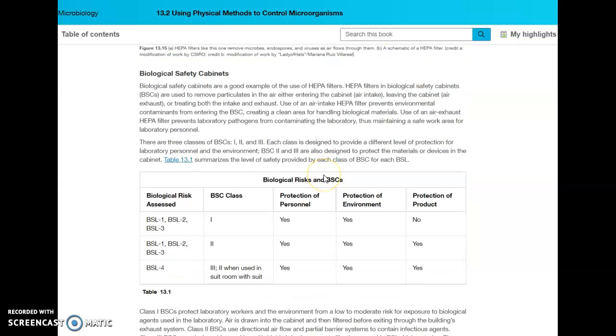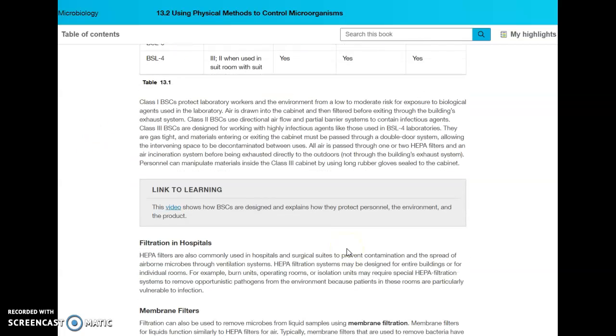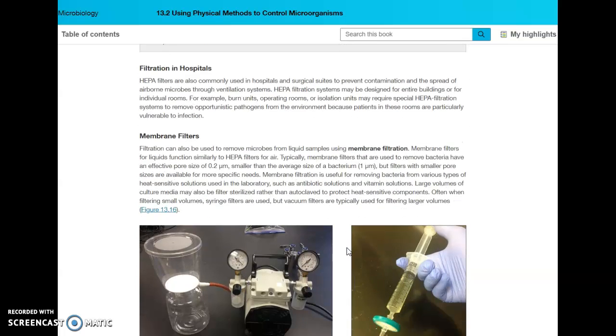Back when we were talking about BSL levels, we were talking about how they work in a hood or in a safety cabinet, and those use HEPA filters as well. There are different classes that can be used depending on the level of biological safety. HEPA filters can be used in hospitals, in operating rooms, burn units. If you have an isolation unit that requires patients to get their own air supply or highly filtered air, HEPA filters can be used for that as well.